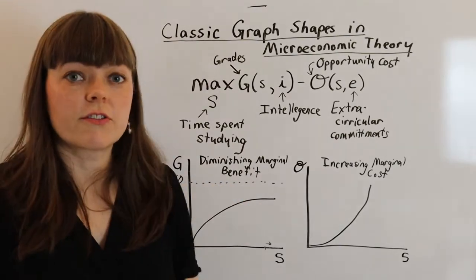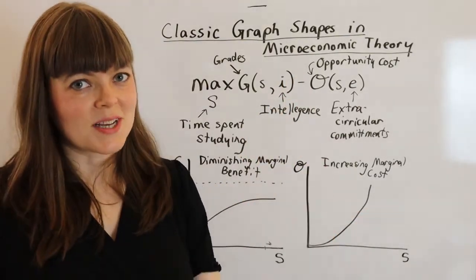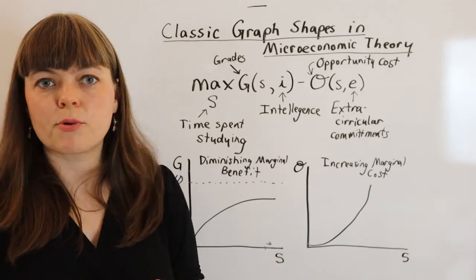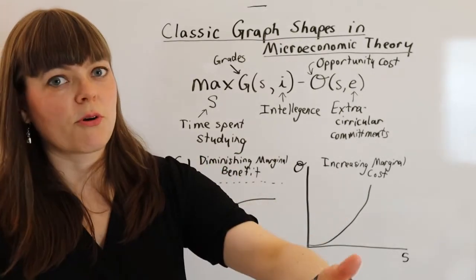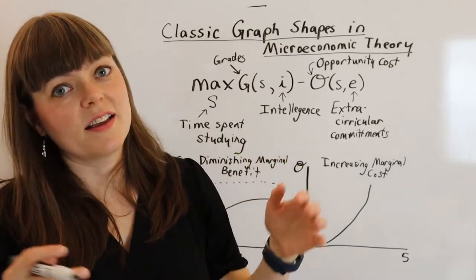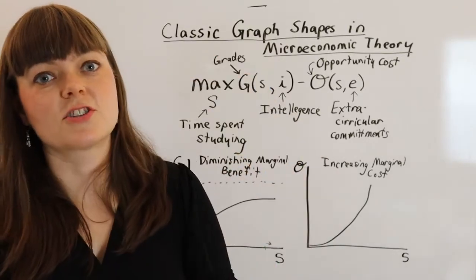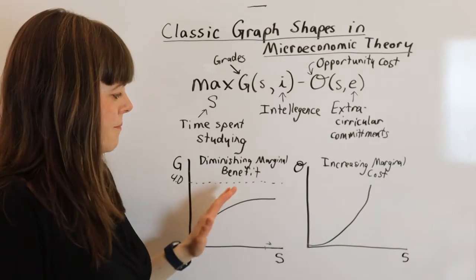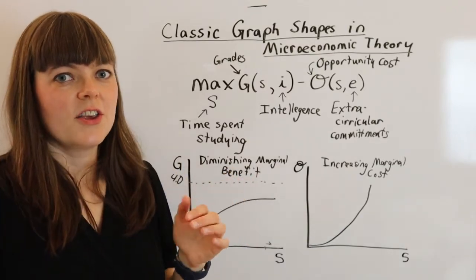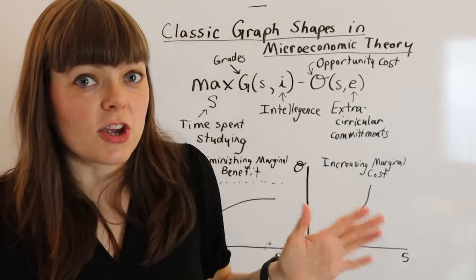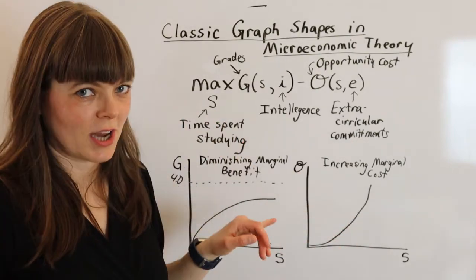And you see this all over the place. Diminishing marginal utility, you might remember from principles of economics, diminishing marginal product, meaning as you produce more products, it becomes less and less efficient to produce them. So there's anything that's good, that's considered a benefit in the model, you might suspect that it could potentially have this diminishing marginal benefit shape.